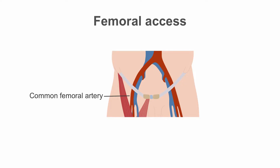The femoral route was historically the main go-to route for arterial access for PCI. First, we should review the femoral triangle. It's comprised superiorly of the inguinal ligament, laterally of the sartorius muscle, and medially by the adductor longus muscle.